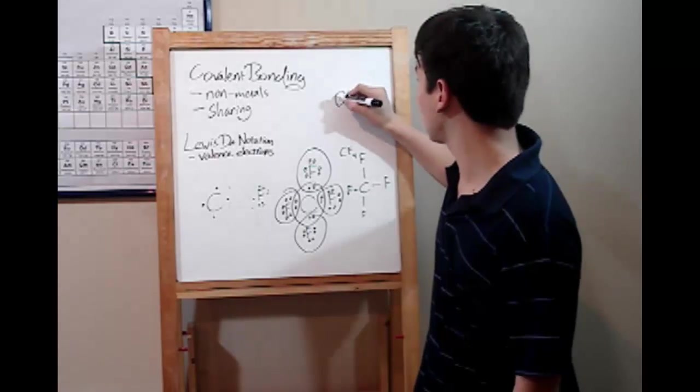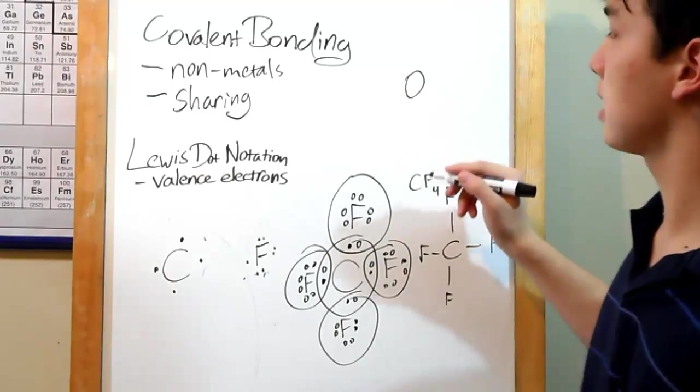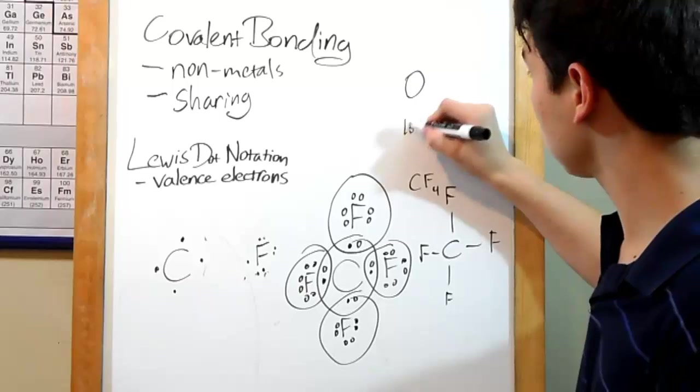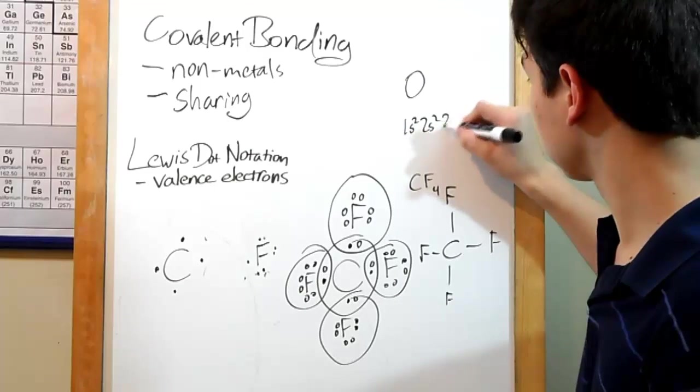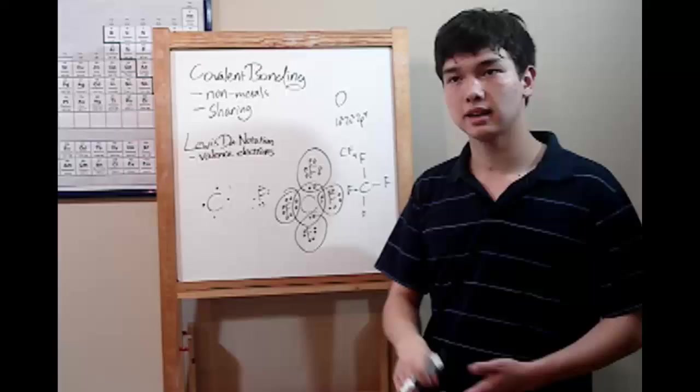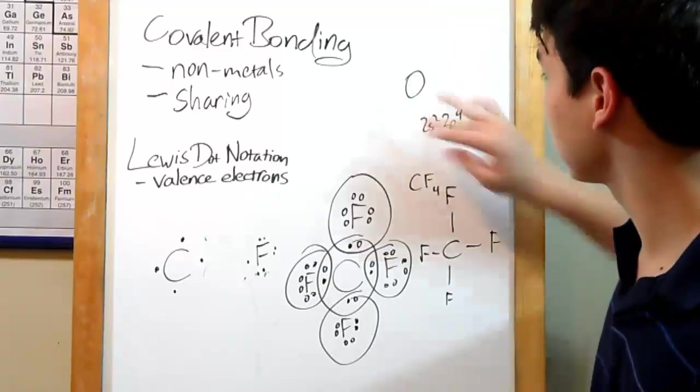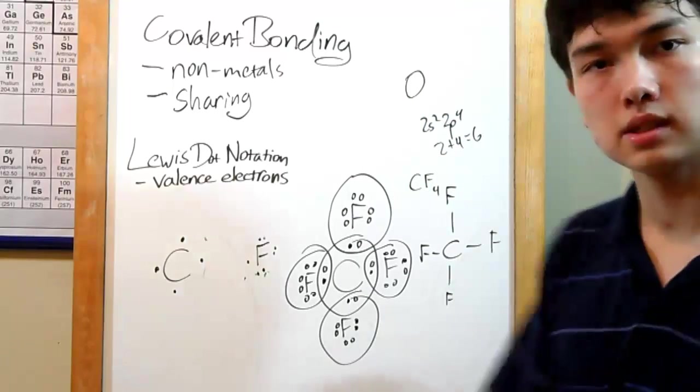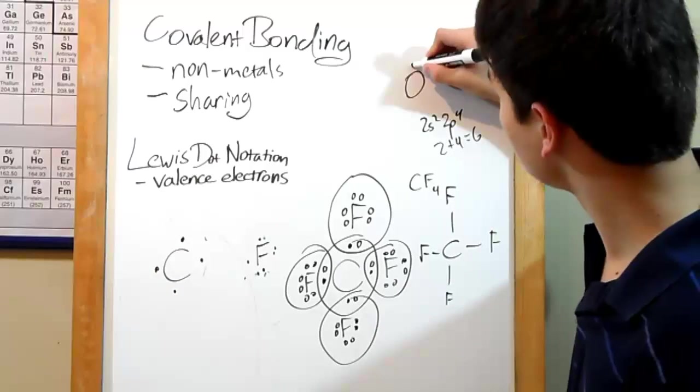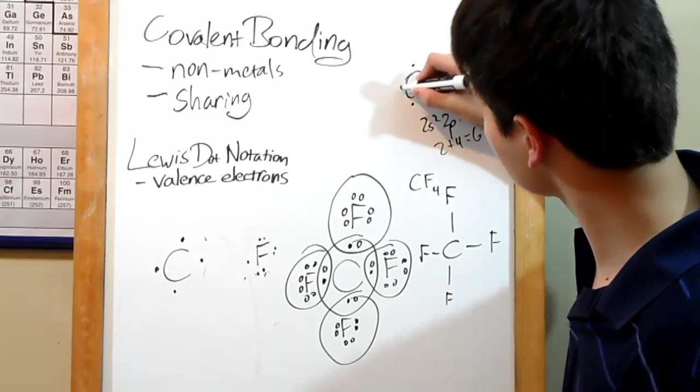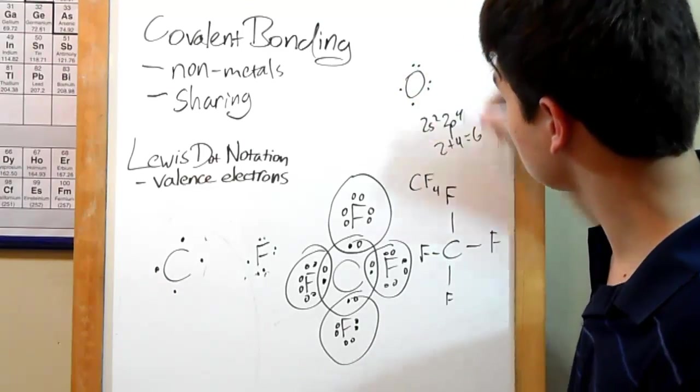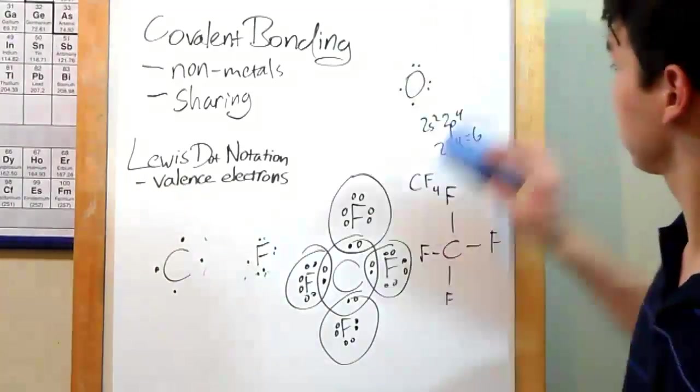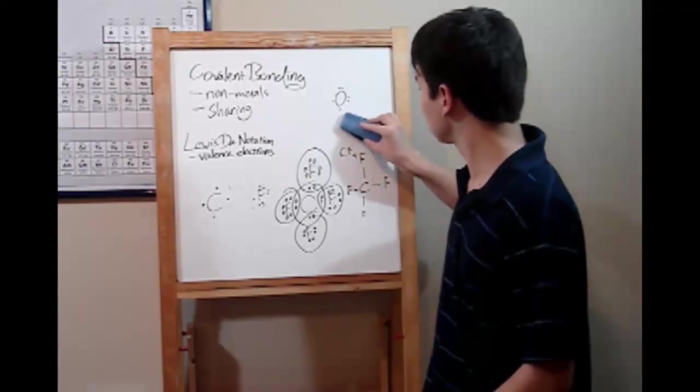Instead, let's use another covalent bond. We'll work with oxygen. Oxygen has an atomic number of 8. 1s² 2s² 2p⁴. Highest energy level is 2, so don't worry about the 1. 2 plus 4 is 6. So 6 valence electrons. 1, 2, 3, 4, 5, 6. Okay. So it needs only 2 to become like a noble gas.